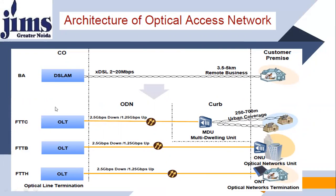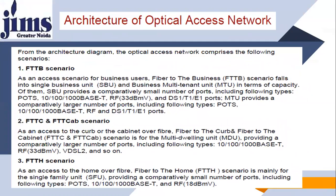From the architecture diagram, the optical access network comprises the following scenarios: the FTTB scenario as an access scenario for business users — fiber to the business — covering single business units and multi-tenant units. FTTC and FTTN scenarios as fiber to the curb or fiber to the cabinet for multi-dwelling units, providing a comparatively large number of ports. FTTP is fiber to the home scenario, mainly for single family units, providing a comparatively small number of ports.